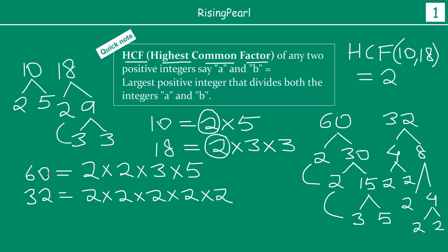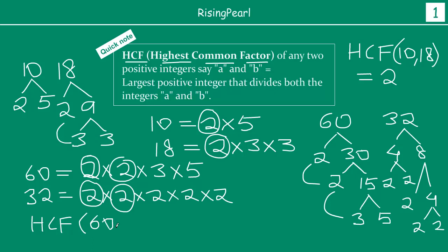Looking at the common factors for 60 and 32: 2 is a common factor, then there is one more 2 that is also a common factor. After that, 60 has 3 and 5 while 32 has three more 2s, so the largest common factor is 2 × 2 = 4. Therefore HCF(60, 32) = 4.